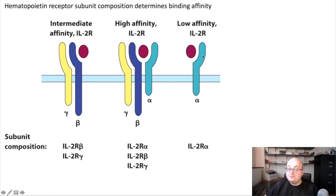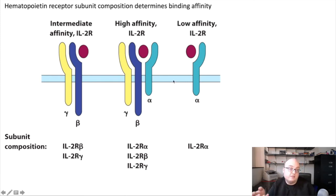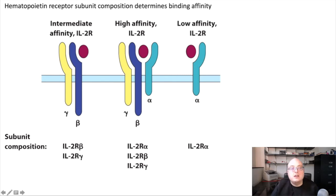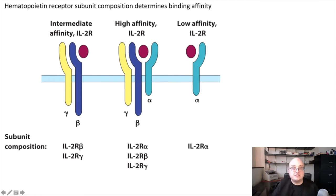A cell with only the alpha subunit is not going to be very sensitive to IL-2, even at high concentrations. So by changing the expression of these different subunits and bringing them together in different combinations, this is a mechanism by which we can tune an immune response — we can change the magnitude in ways that determine how strong of a response we get from any individual cytokine. The receptor subunit composition for hematopoietin cytokine receptors determines their binding affinity, and thus how sensitive those receptors are to being activated by a given concentration of cytokine.